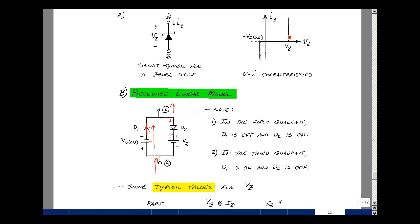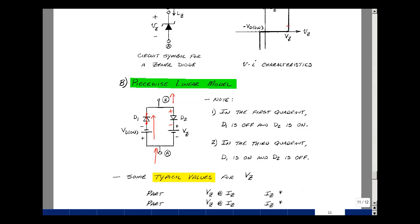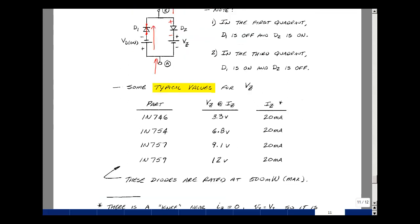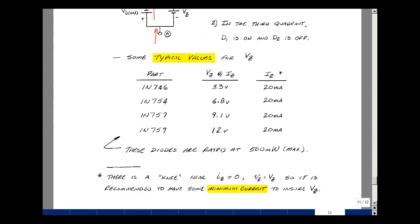They really recommend having some minimum current in the Zener diode to get this regulated voltage. These Zeners were specified to have at least 20 milliamps of current flowing in them to assure these Zener voltages. These particular parts are rated at a half a watt or 500 milliwatts.